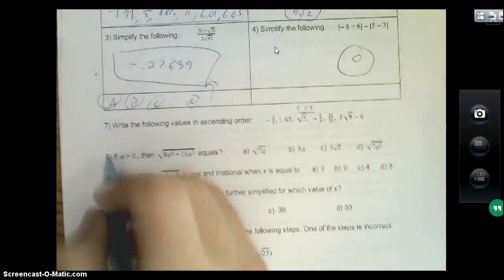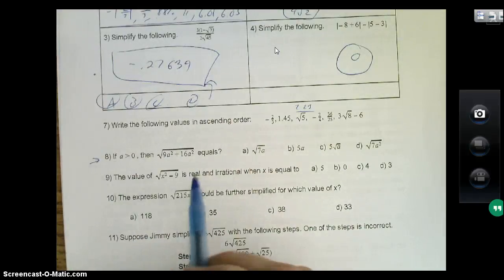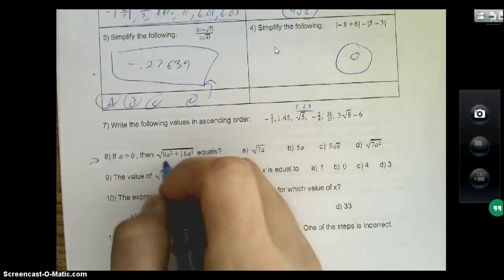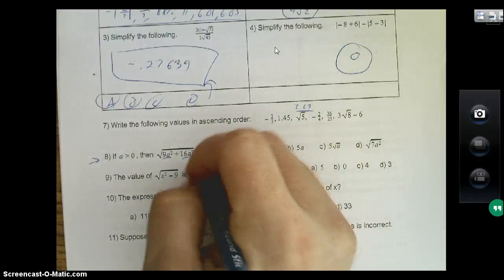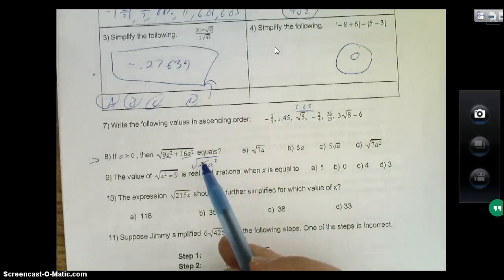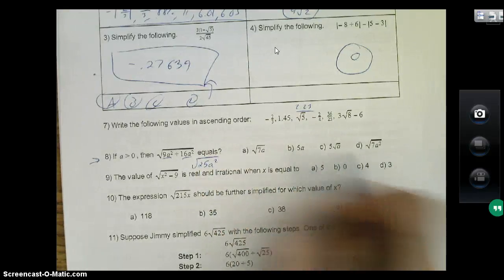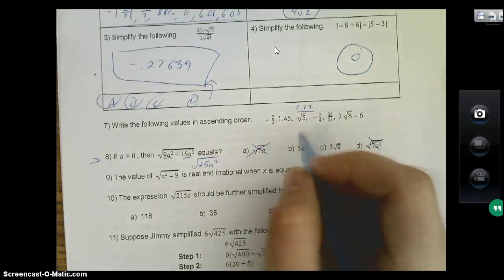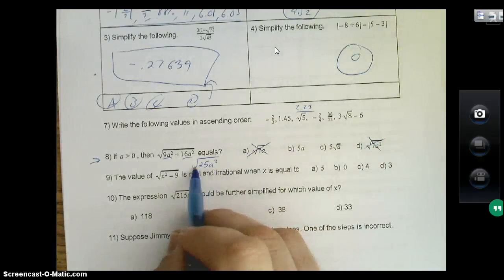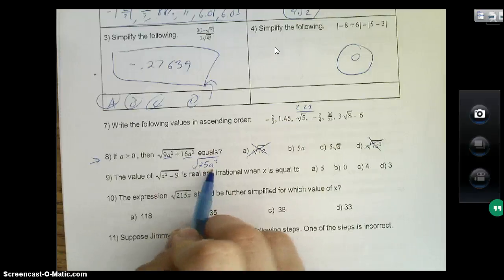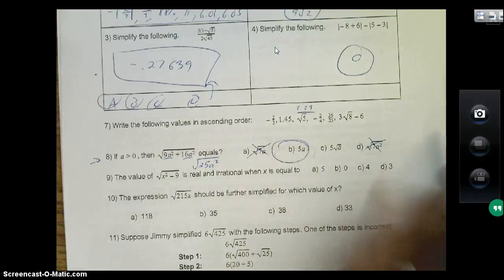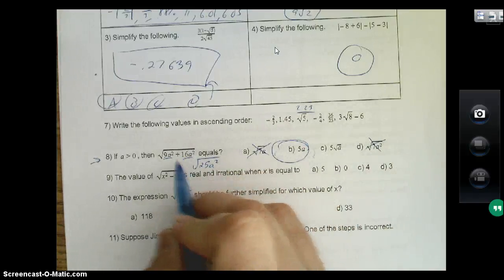All right, number eight: if a is greater than zero, then 9a² + 16a² equals—all that under the radicand. Well, here's the deal: because they're both a², you can combine them together, so 25a². Well then what's the square root of 25? Five. I can immediately get rid of these two. Here's the trick for doing multiple choice tests: eliminate as many answers as possible. The other thing is what's the square root of a²? Just a plain old a. So we can reduce it down to just 5a.